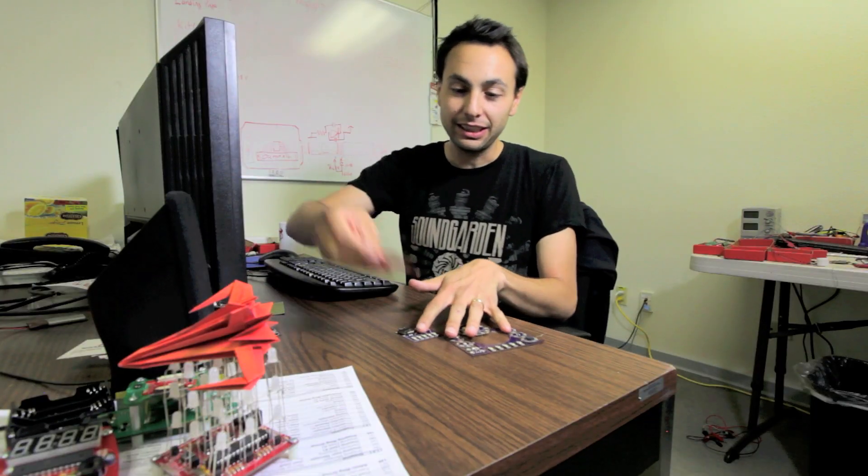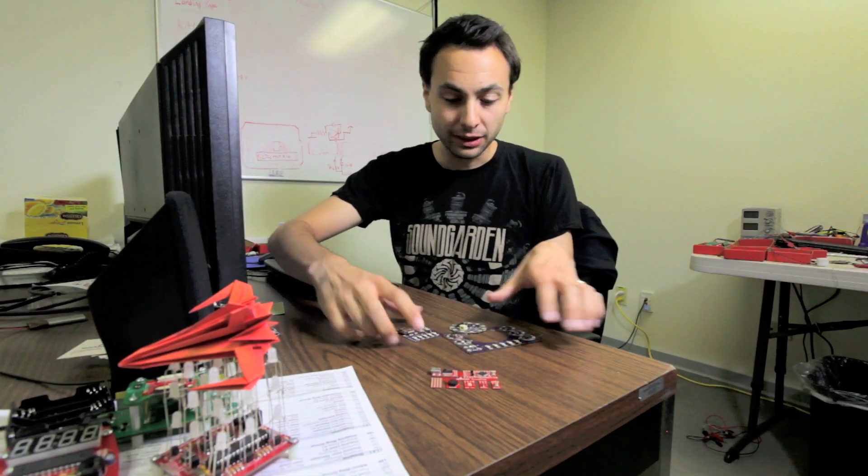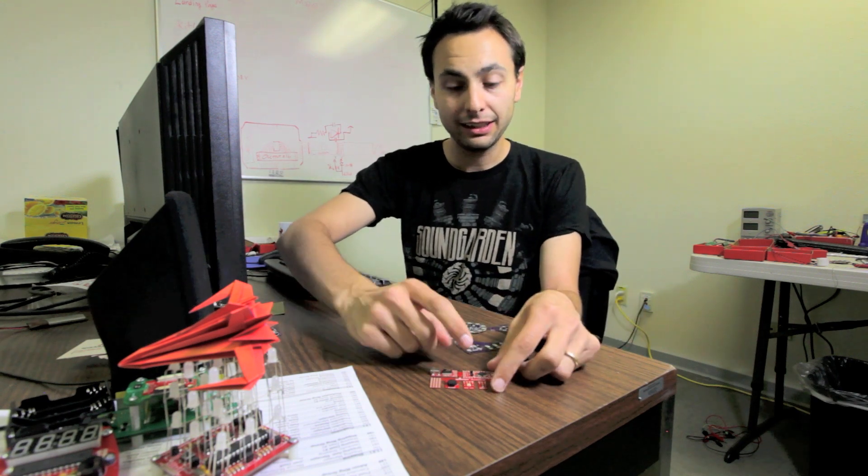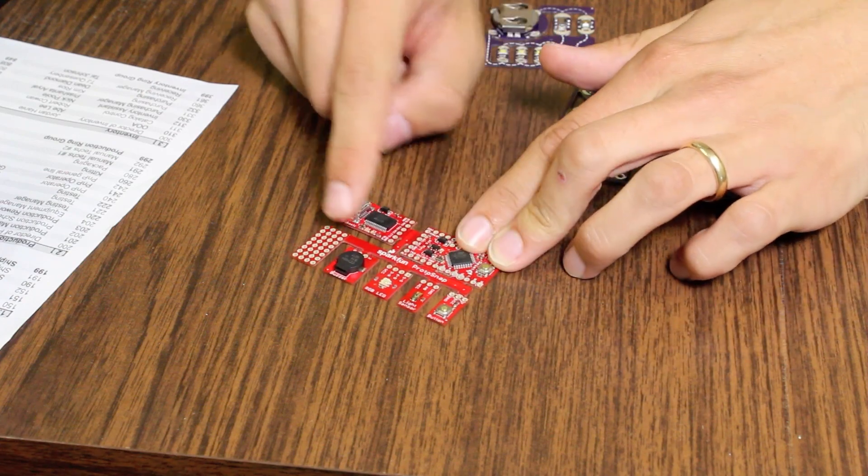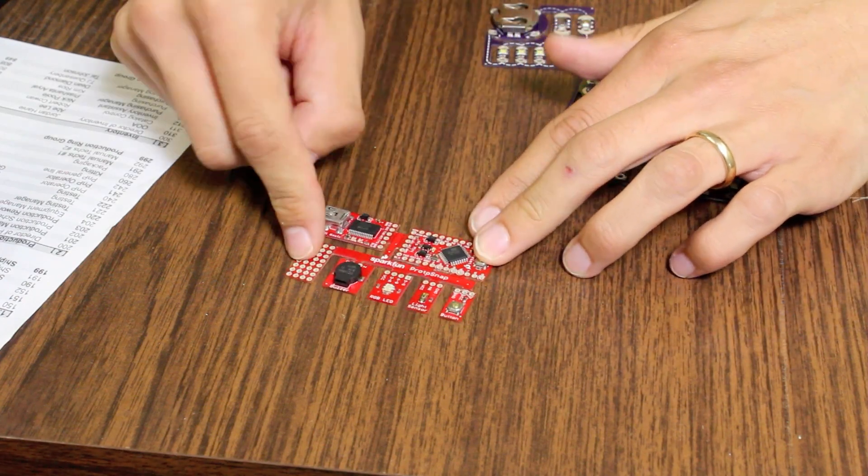And then we've also got the Protosnap Pro Mini, which is a similar concept, except instead of LilyPad, it's got an Arduino Pro Mini, an FTDI Basic, a similar range of inputs and outputs, and a prototyping board.